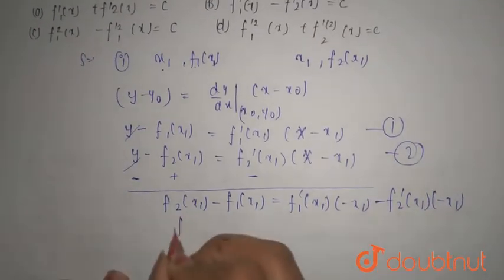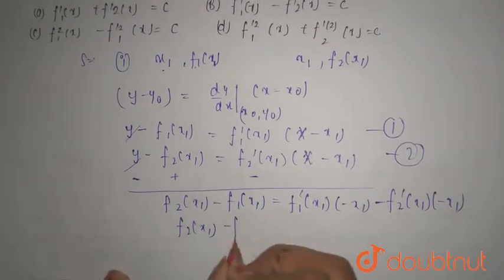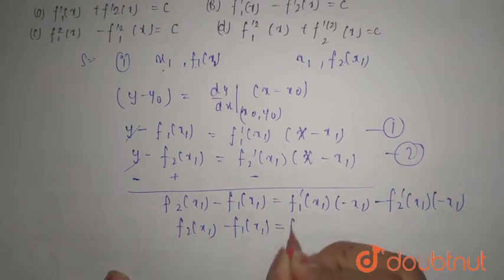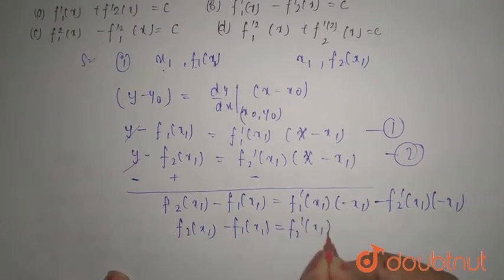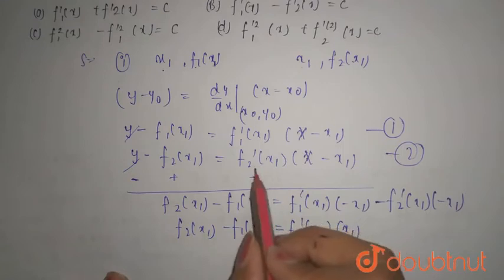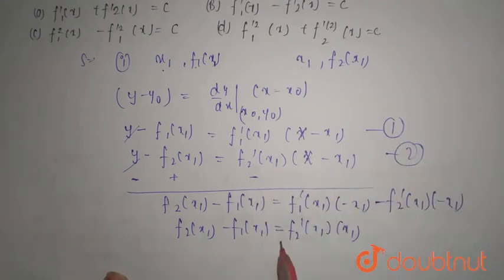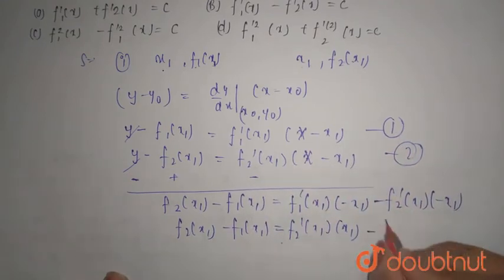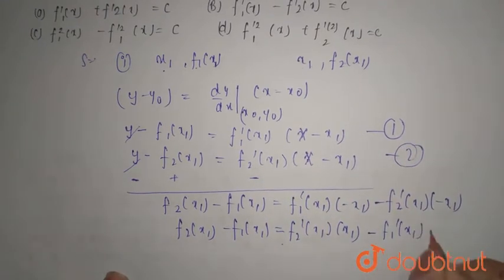So f2(x1) as it is minus f1(x1) as it is equals f2'(x1) of x1, that is for first equation, and this is for second equation, minus f1'(x1) and this is x.